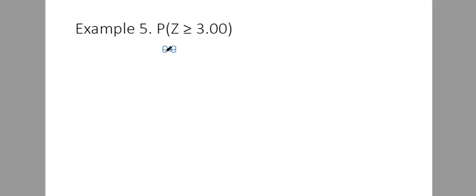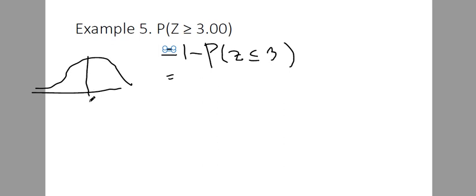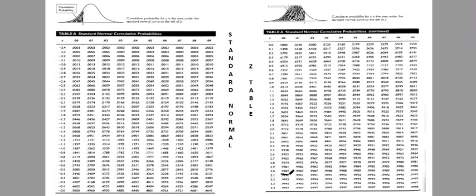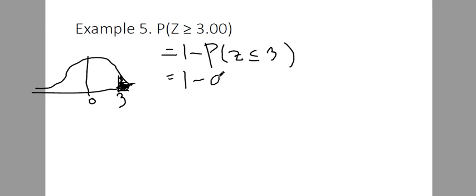Next example: probability of Z greater than or equal to 3. This is greater than, so our strategy is 1 minus the probability to the left. Positive 3 is far to the right, so by inspection the area to the right is very small. Looking up 3 in the table gives 0.9987. So 1 minus 0.9987 equals 0.0013. The shaded area is 0.0013.